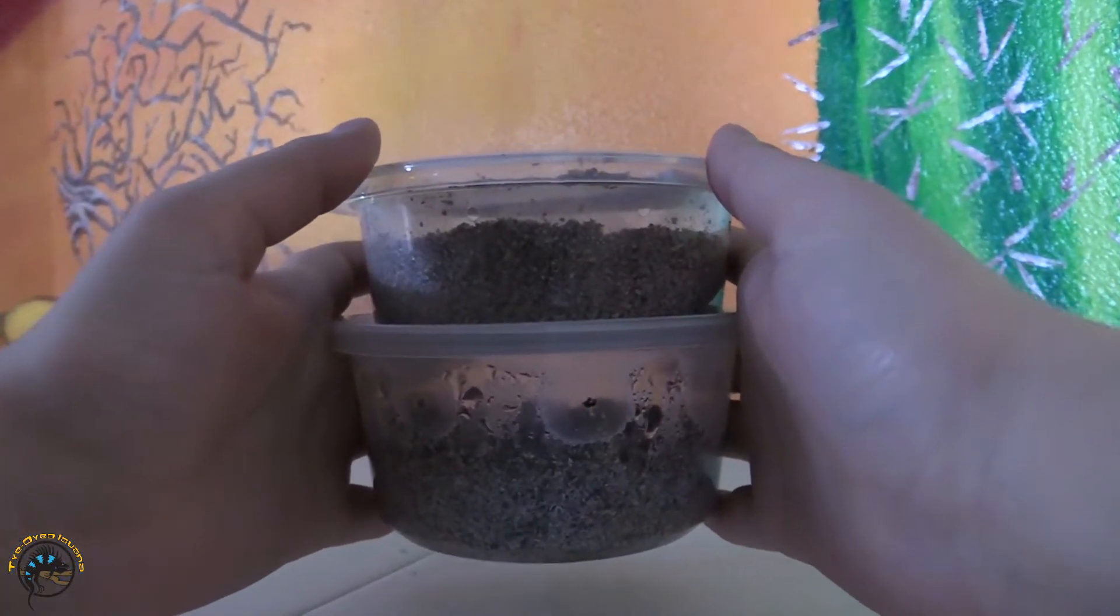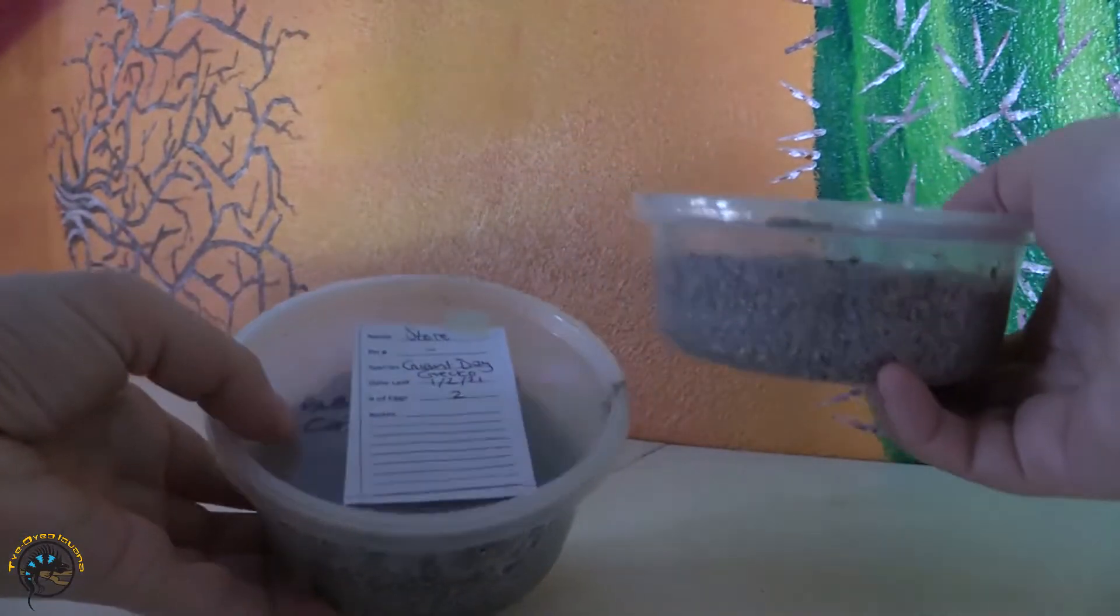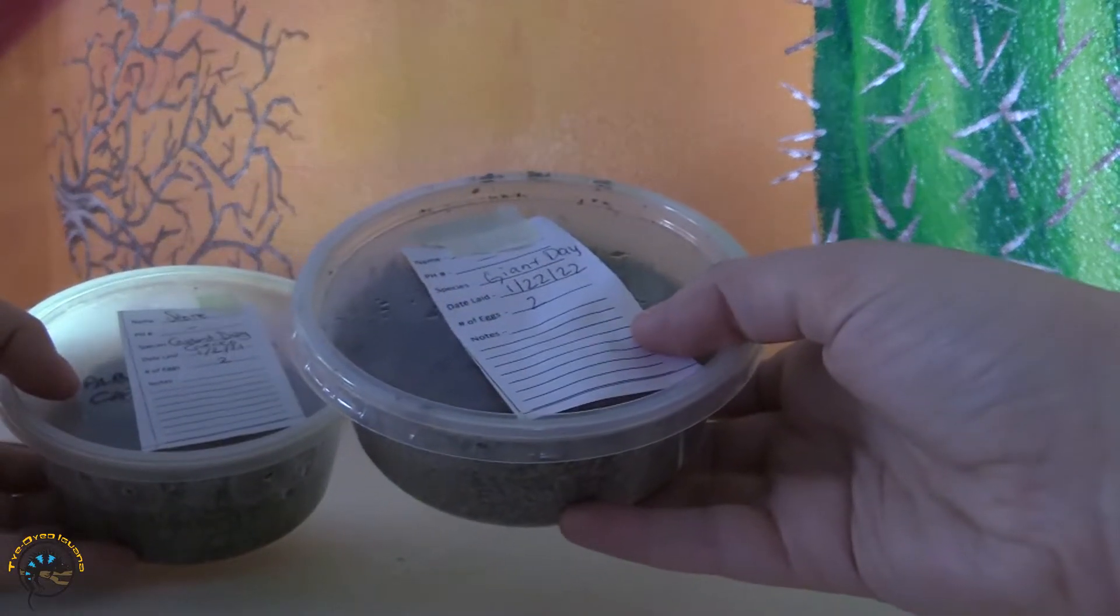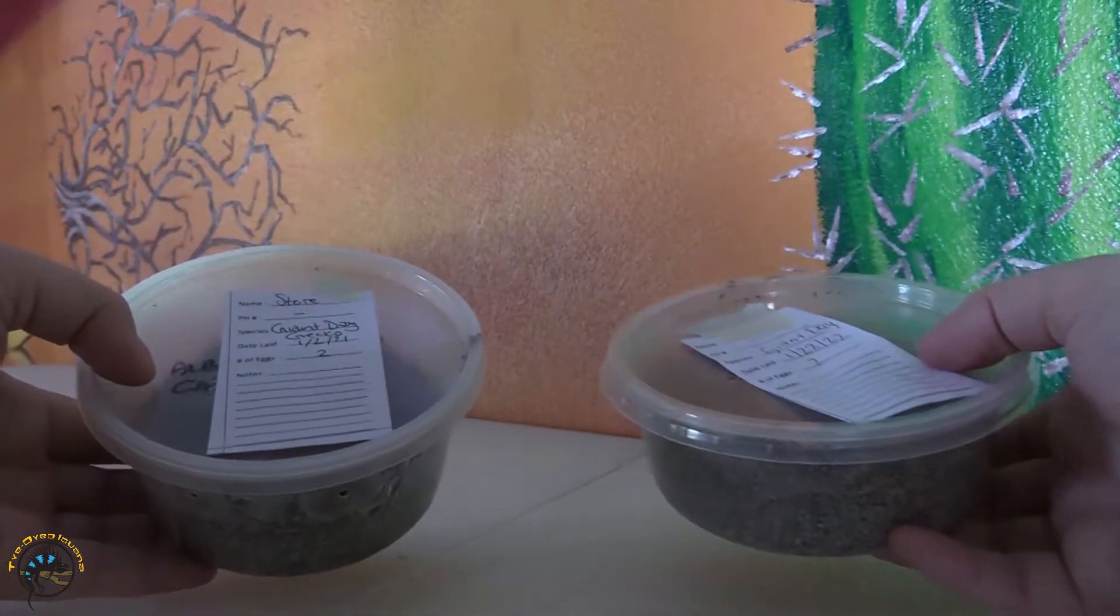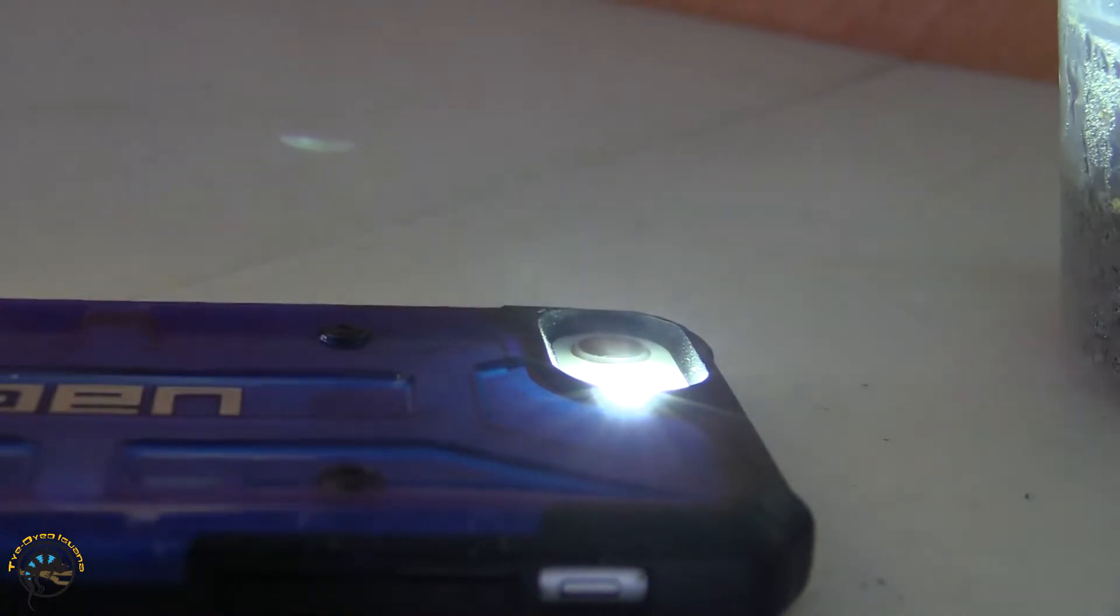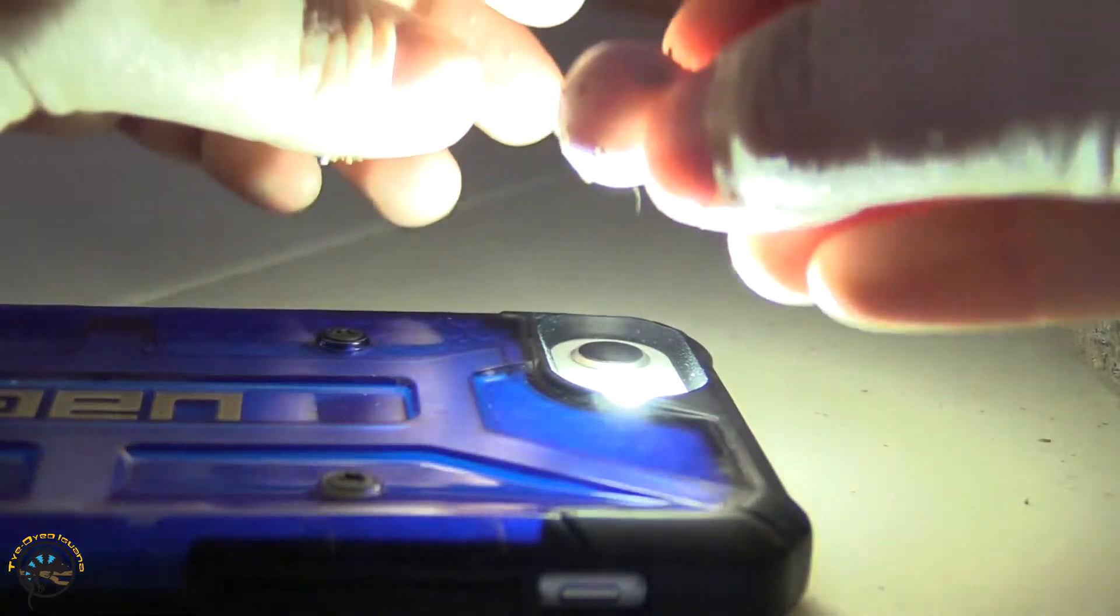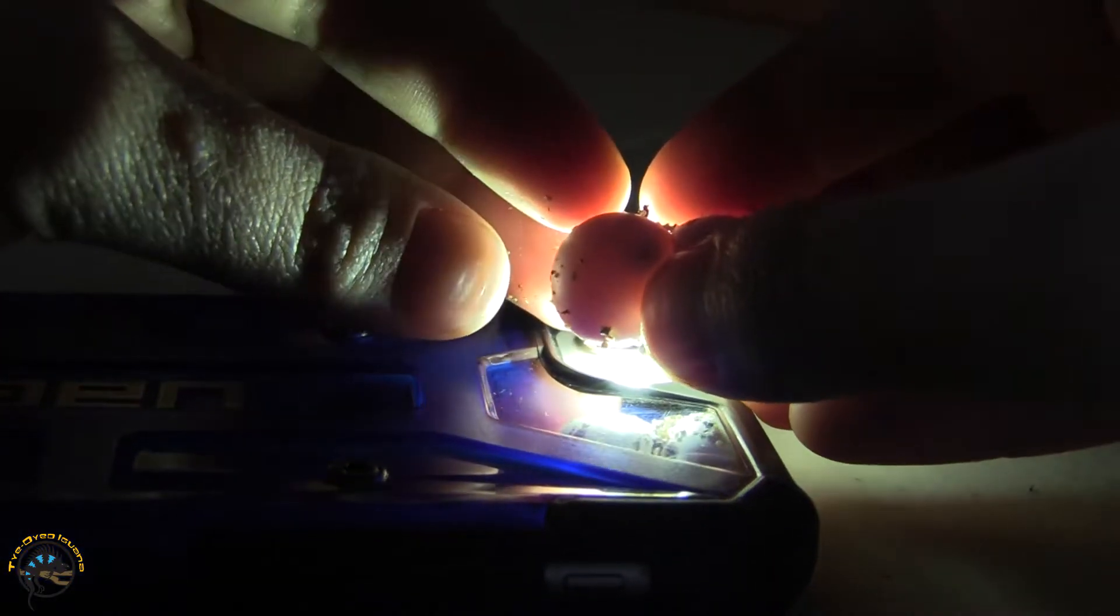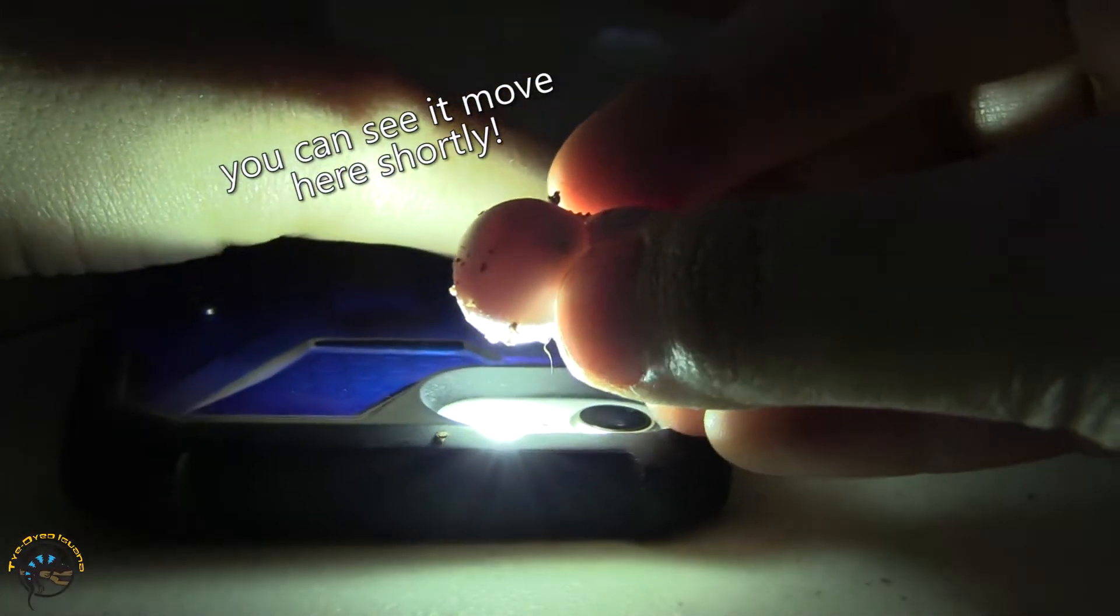All right, so here we have our two egg cups of the giant day gecko eggs. We got one from the second and one from the 22nd. So we're gonna go ahead and candle these guys today and see how they're doing. All right, so we're going to use our little flashlight and be very gentle with the eggs. The eggs are stuck together actually. So these are the ones from the second.